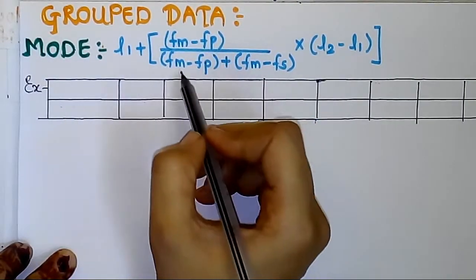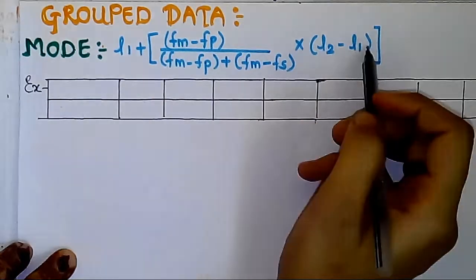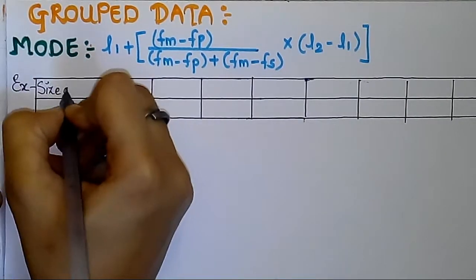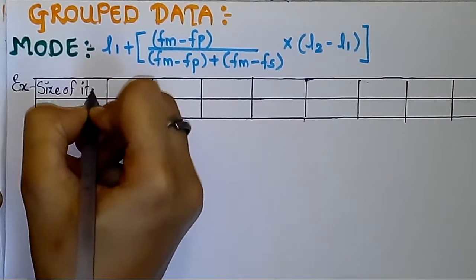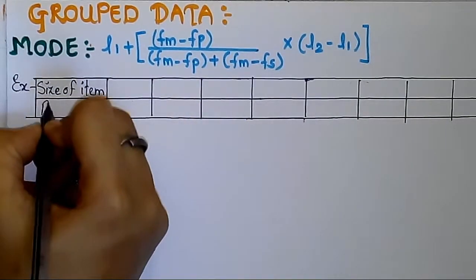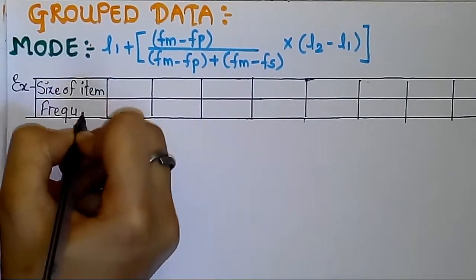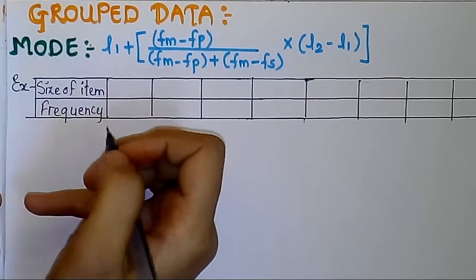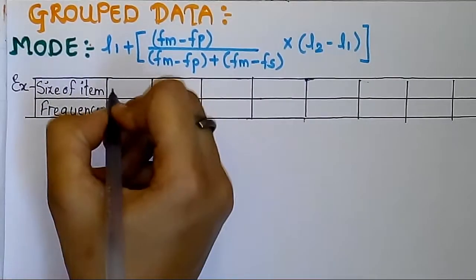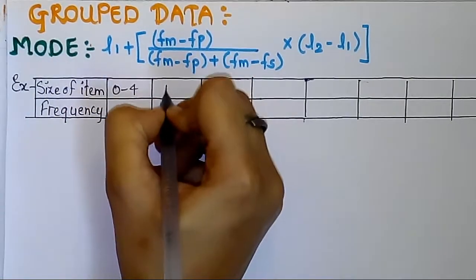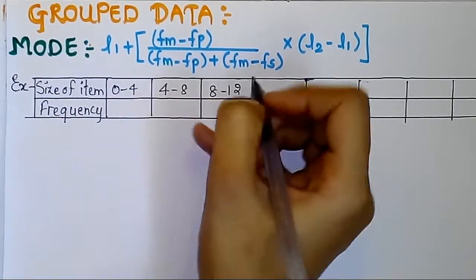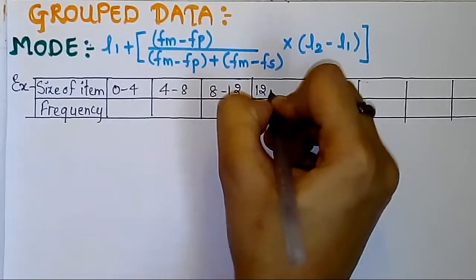Now for grouped data, there is a formula to find the mode. Basically the questions in the exams are asked based on grouped data only, because ungrouped data is very small — just enough to define. Those questions will be asked in one-word answers and all. So here I am taking one example in tabular format, as the question will be given to you.